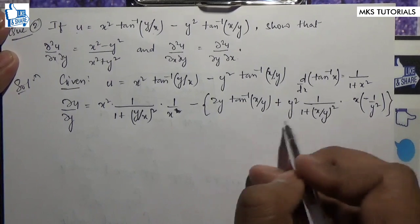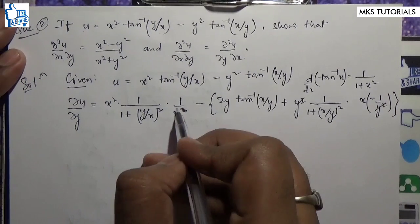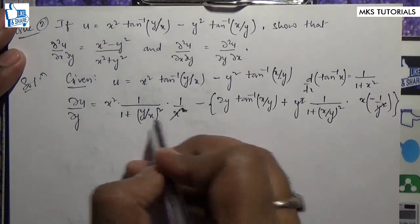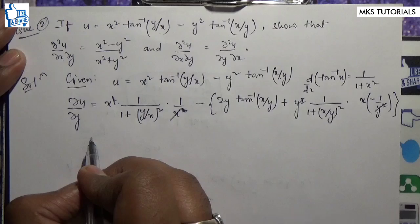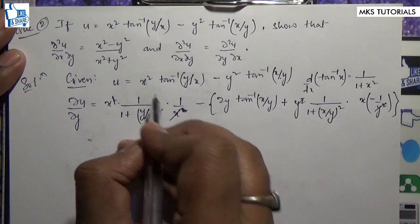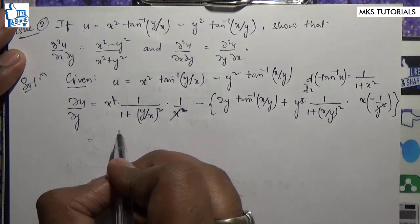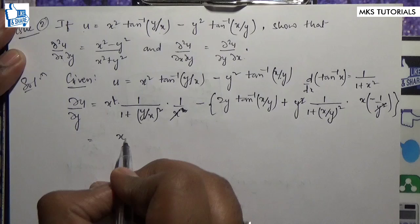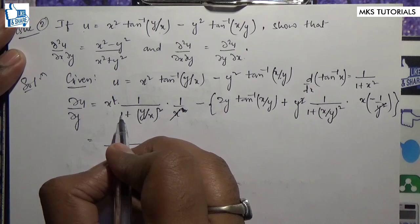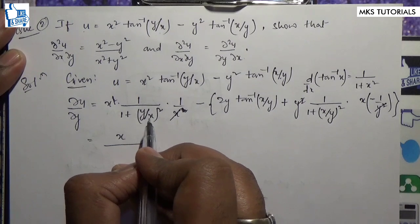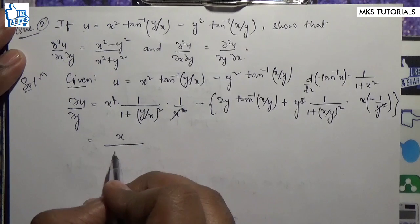y² cancels — cancel, cancel, cancel. Now we will do: x, and 1 plus y²/x² times x.